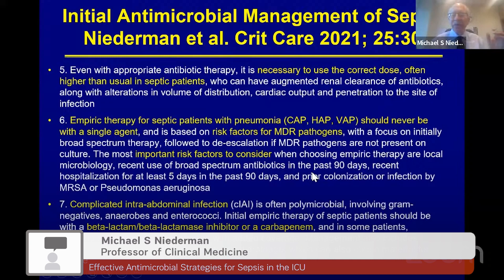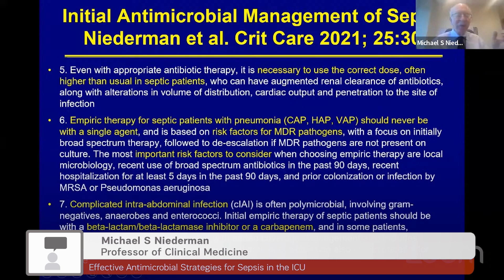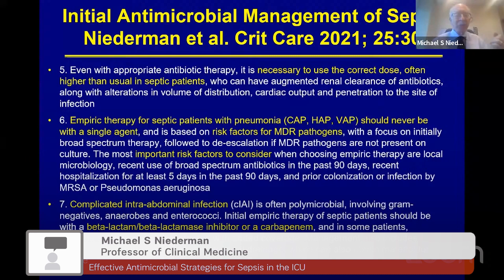The most important risk factors for empiric therapy decisions include local microbiology, recent use of broad-spectrum antibiotics in the last three months, recent hospitalization for at least five days in the last three months, and prior colonization or infection by pathogens like MRSA or Pseudomonas. For complicated intra-abdominal infection — often polymicrobial, involving gram-negatives, anaerobes, and enterococci — initial empiric therapy is often with a beta-lactam/beta-lactamase inhibitor combination or carbapenem. Candida coverage may be needed in some patients. Importantly, antibiotics alone are often insufficient; source control with percutaneous or surgical drainage of intra-abdominal abscess is essential.